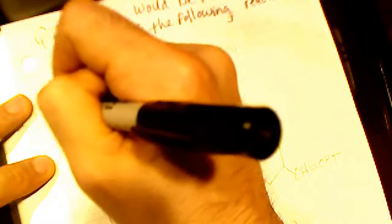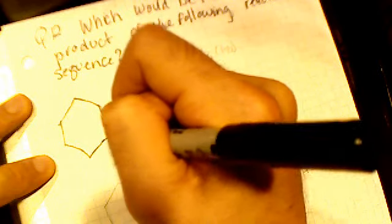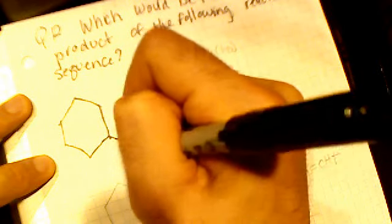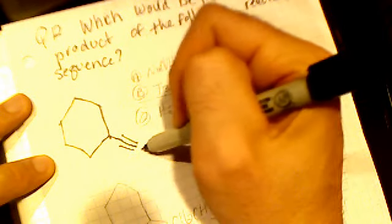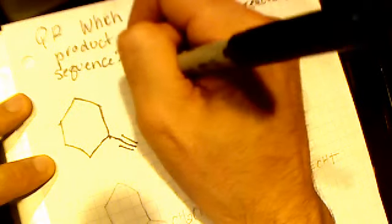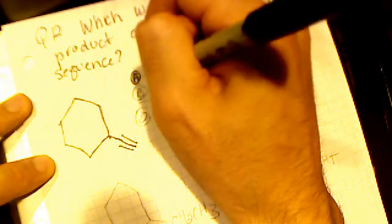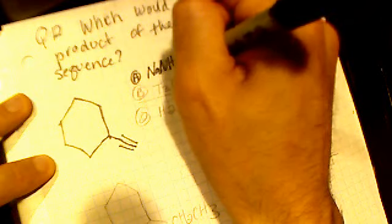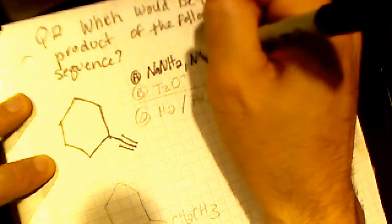So they give us this hexane molecule with a triple bond, with this CH bonded to CH triple bond. First we're going to treat it with sodium amide in liquid ammonia.